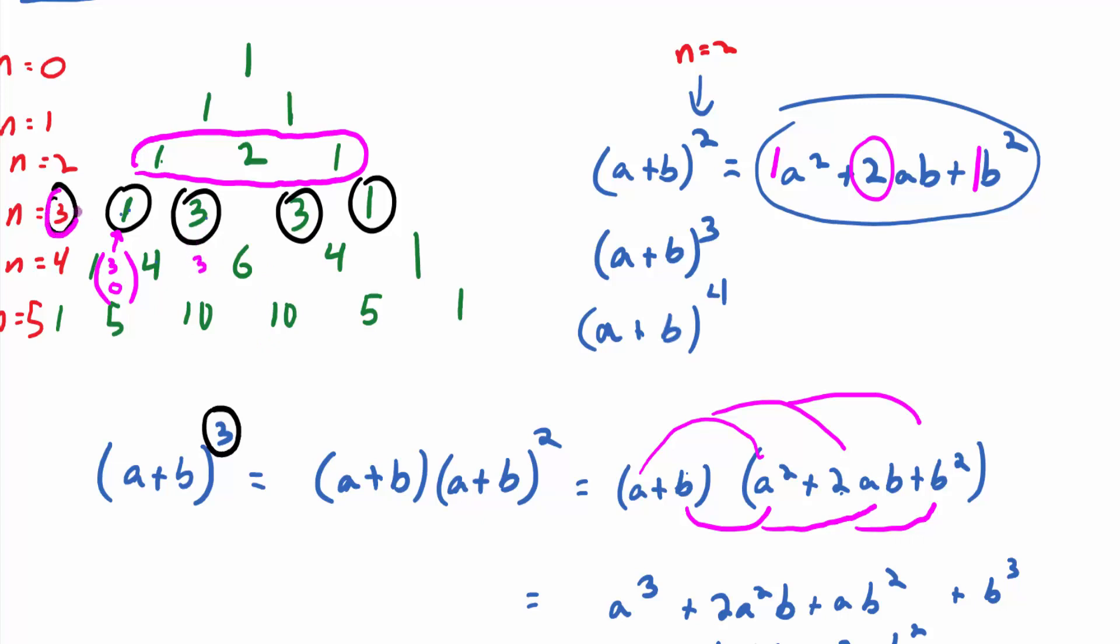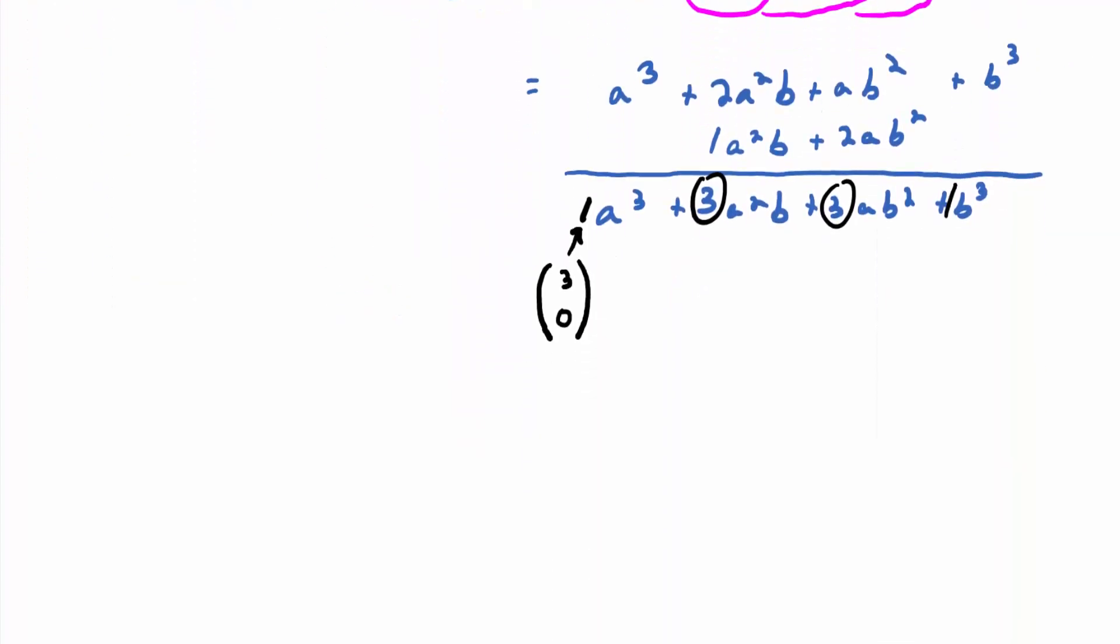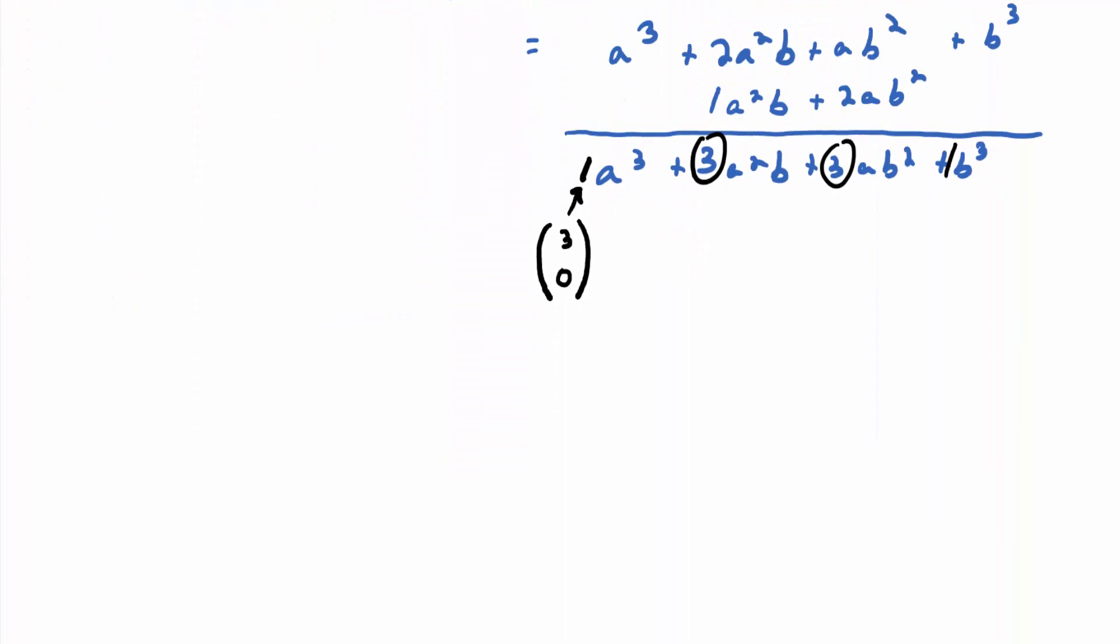Okay? And then this 3 right here is 3 choose 1. The 3 comes from the n. And this 3 right here, we call it 3 choose 2. And this 1 right here, we call it 3 choose 3. And I know that looks weird if it's the first time you've seen it, but you'll get used to it real quick.